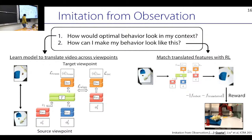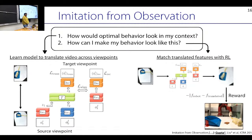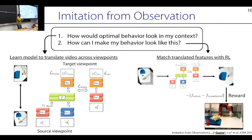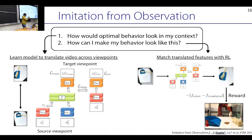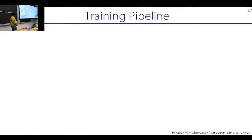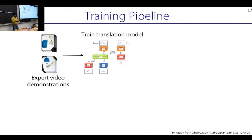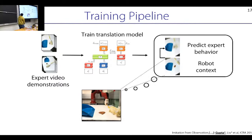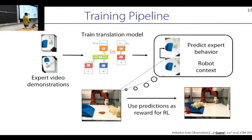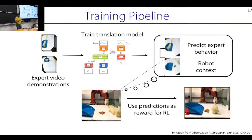We use autoencoder-style features extracted from a bottleneck for the feature matching. The reward is assigned as the distance between translated features and the robot's own trajectory per time step — you compare translated features at every time step and sum the distances to get the RL reward. You sample pairs of source and target viewpoints, contextualize the target by the first image in the target video, and do this for all pairs. Putting it together: demonstrations → translation model → feature-matching reward → reinforcement learning to learn the task.